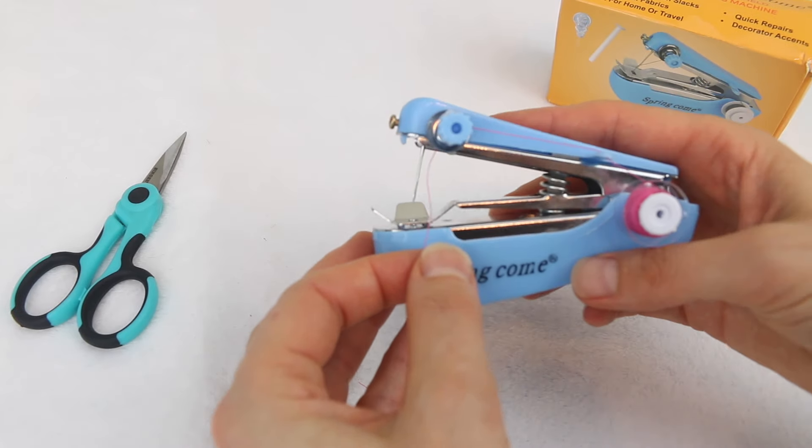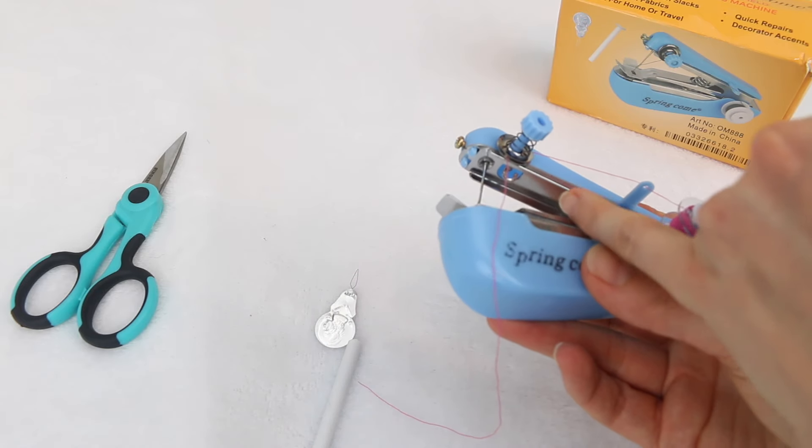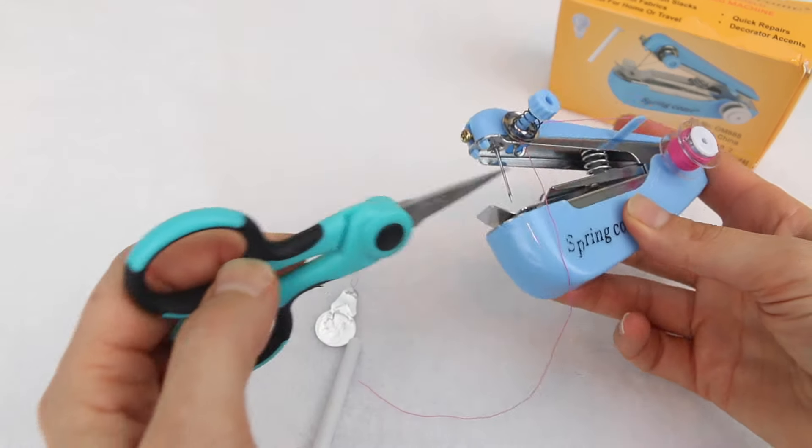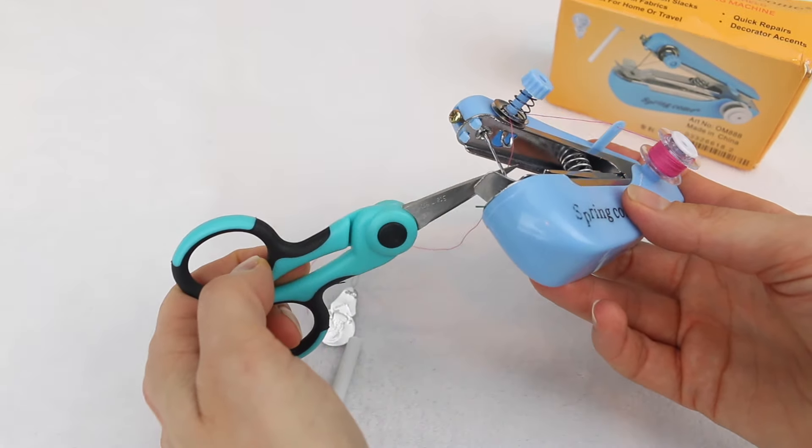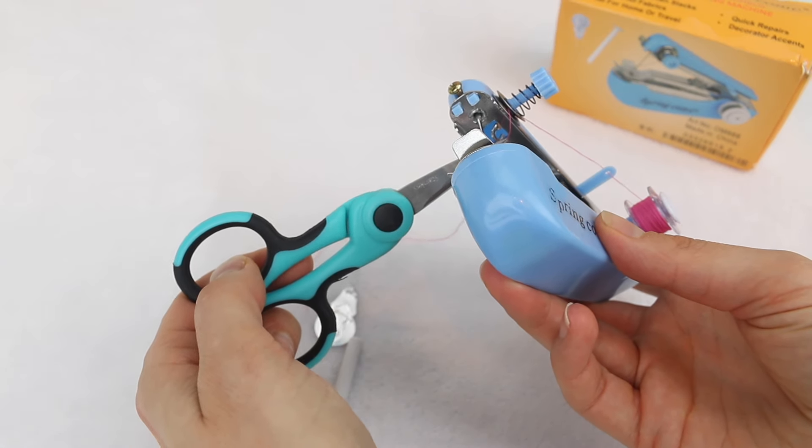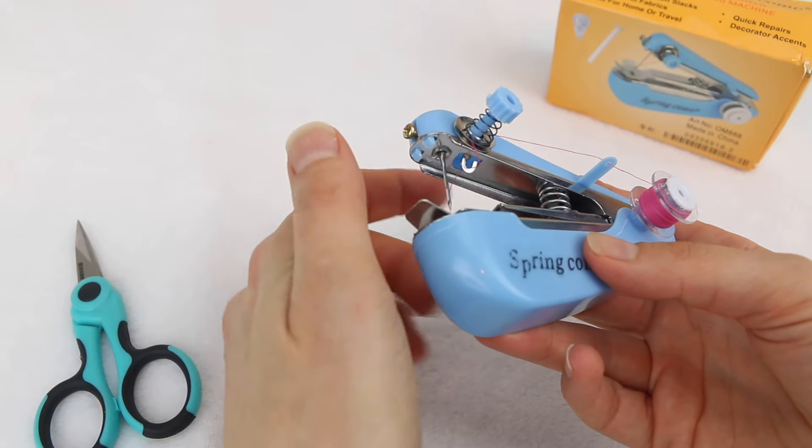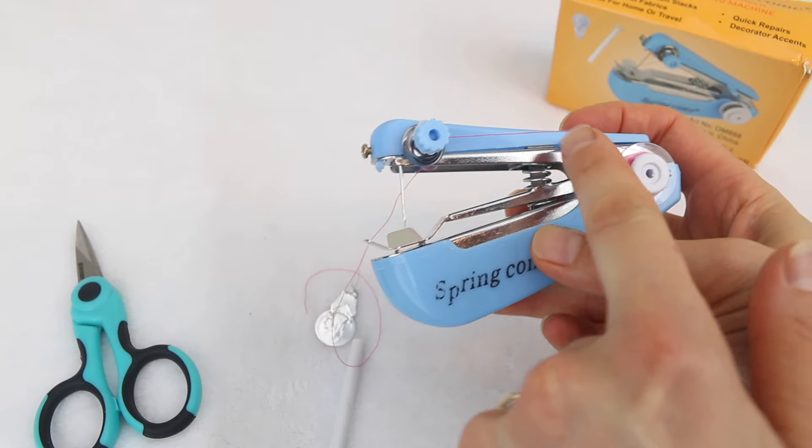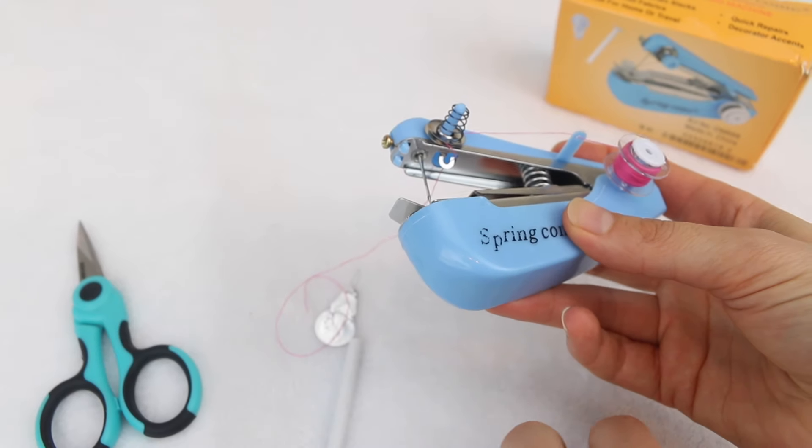So your machine should look a little something like this now. The next thread guide is actually this little hook here under the needle arm. So this is a bit of an awkward step. So I tend to get my little pair of scissors and I just use those to get that thread up over the hook. So you've got the first thread guide here. The second is through the tension discs and the third one is the hook there.